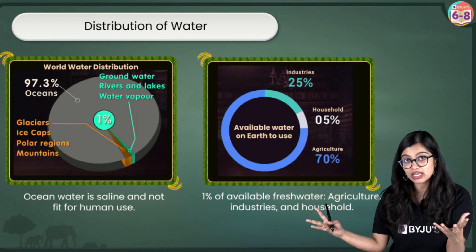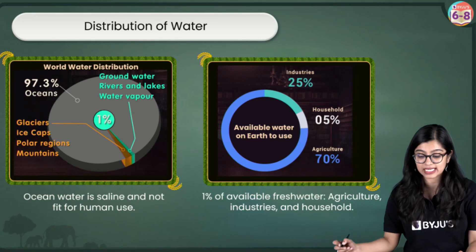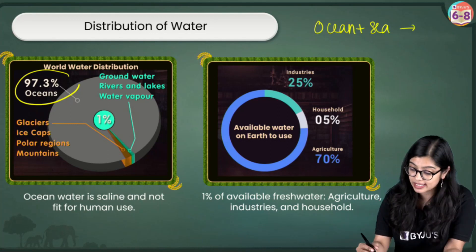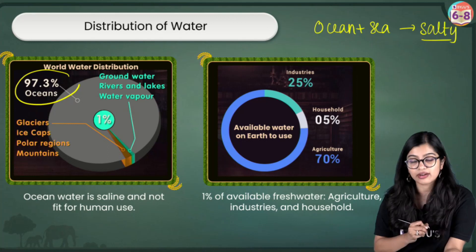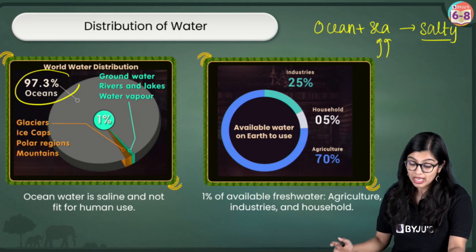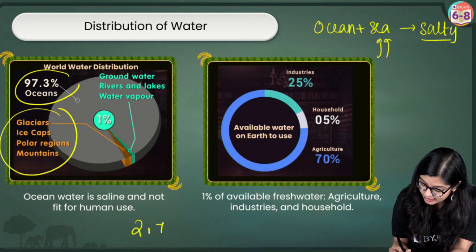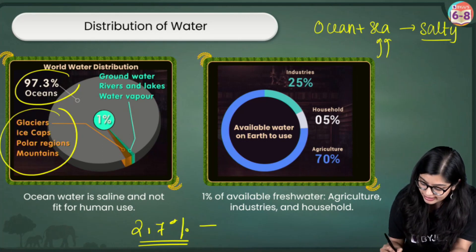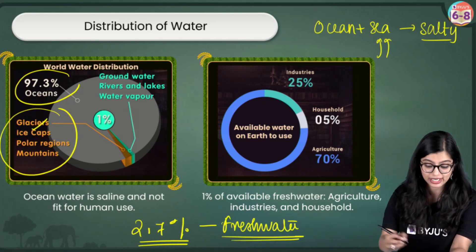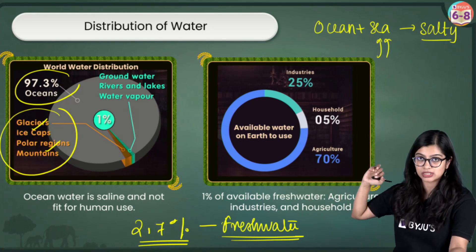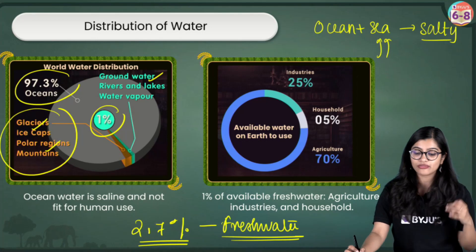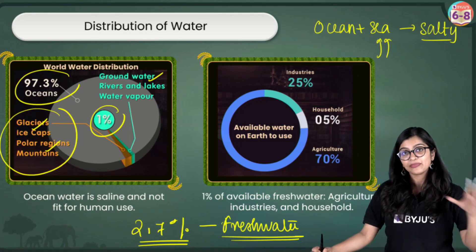Even though three-fourths of the earth is covered with water, 97.3% is present in the oceans. The oceans and seas are called marine water sources — they are salty and not ideal for human consumption, leaving you with less than 3% of freshwater resources. Nearly 2.7% of it is your freshwater sources, but a large percentage of that is present in glaciers and ice caps in the polar regions and mountains, which leaves you with about 1% of actual water that we can consume, existing as groundwater, rivers, and lakes.